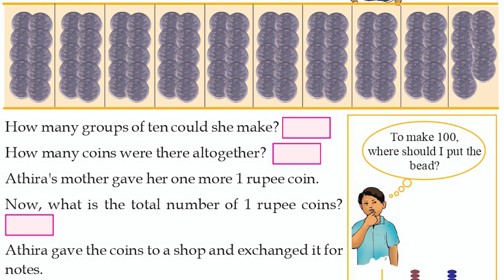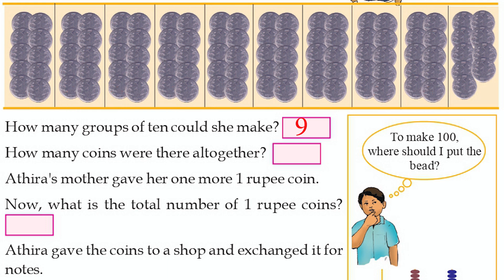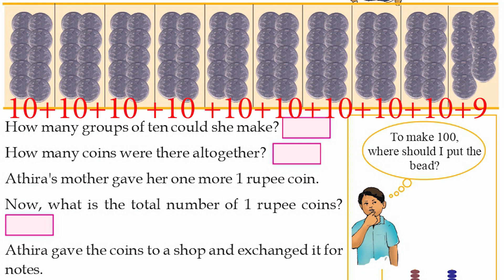How many groups of 10 could she make? She could make 9 groups of 10, plus 9 remaining coins. How many coins were there altogether? 90 coins plus 9 coins equals 99 coins.